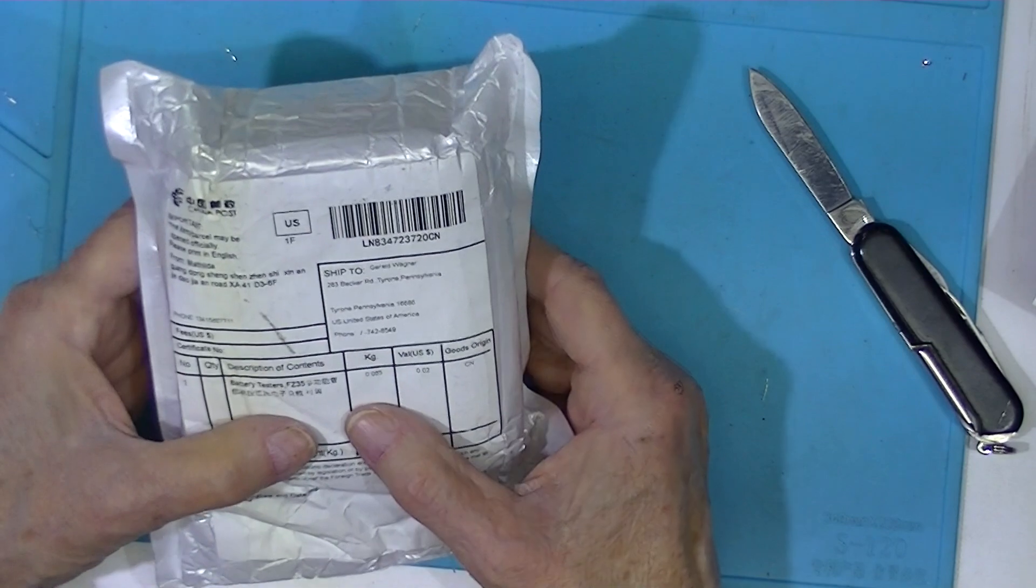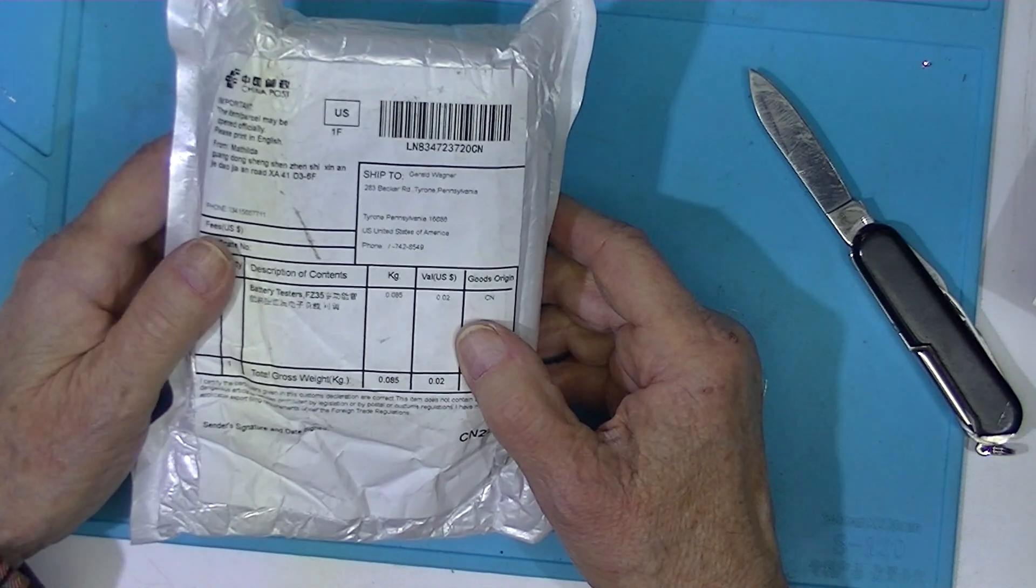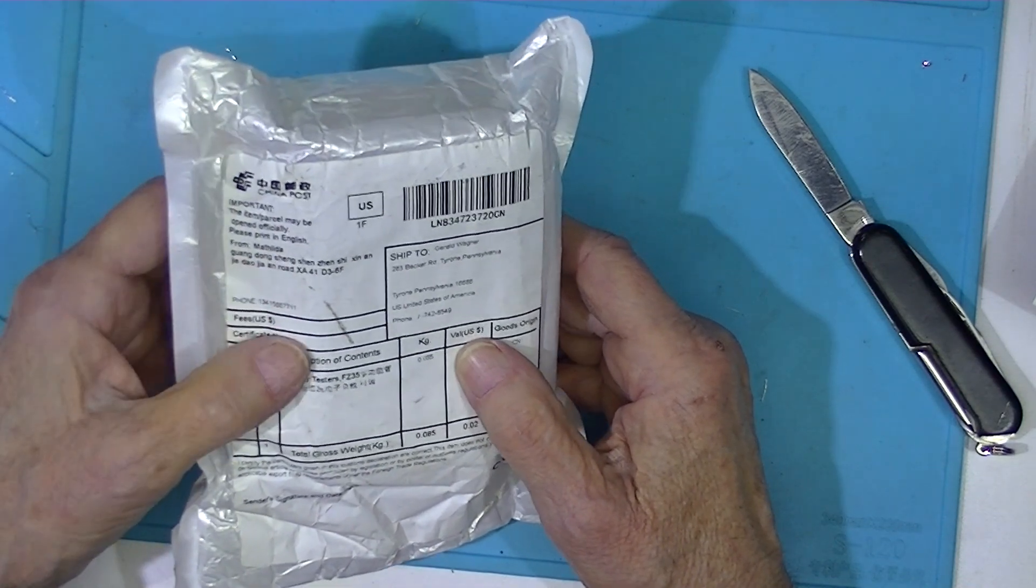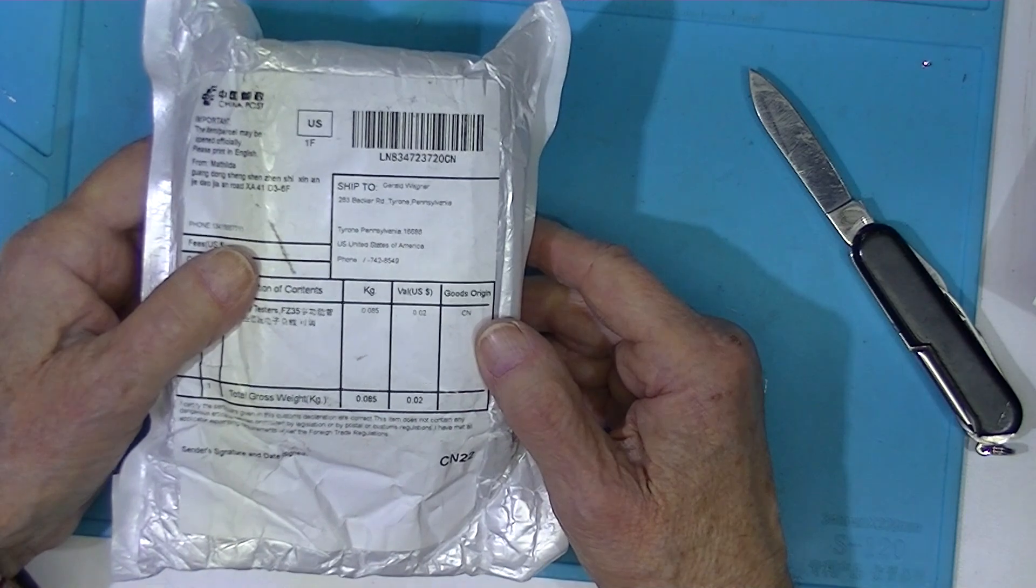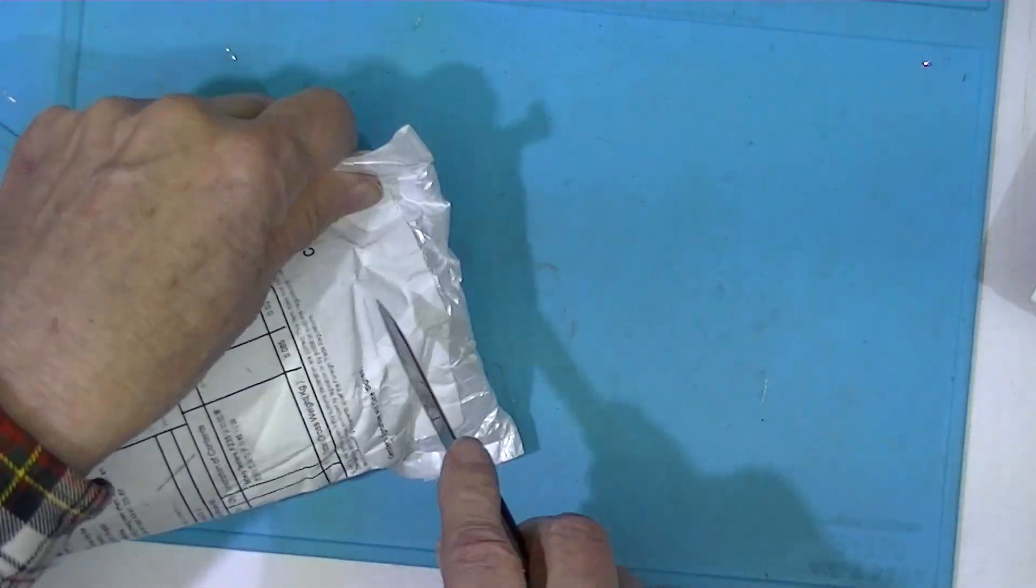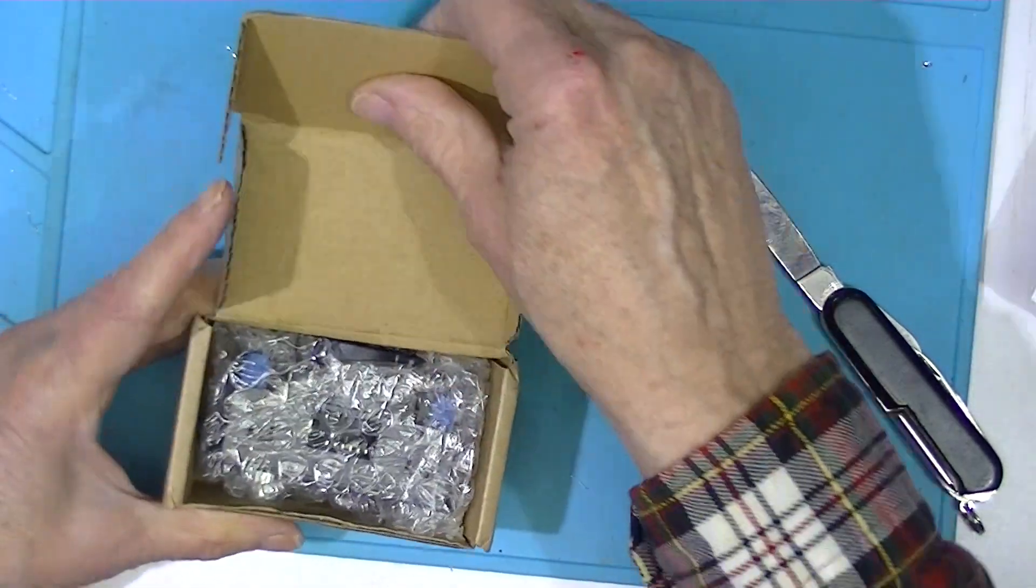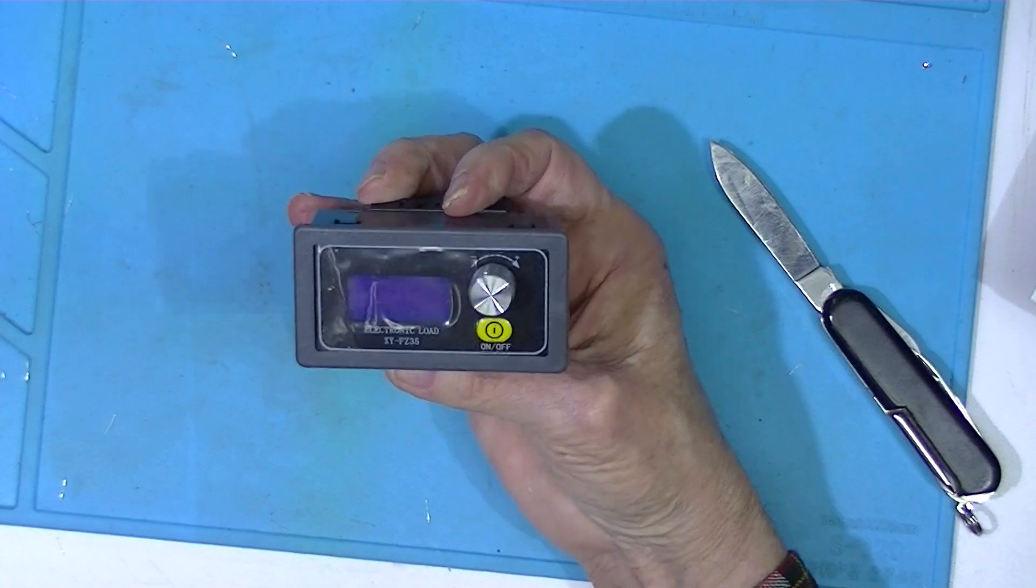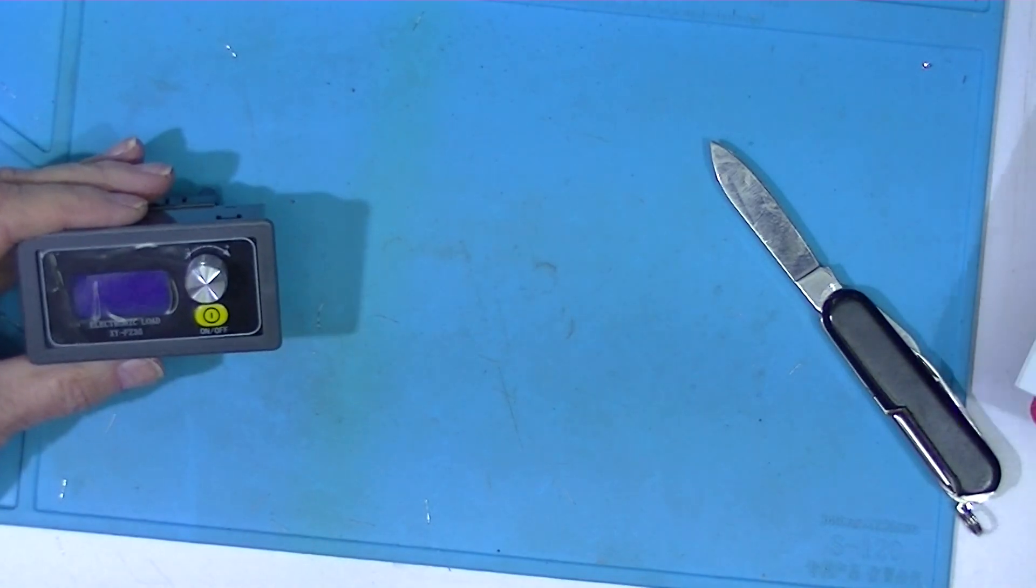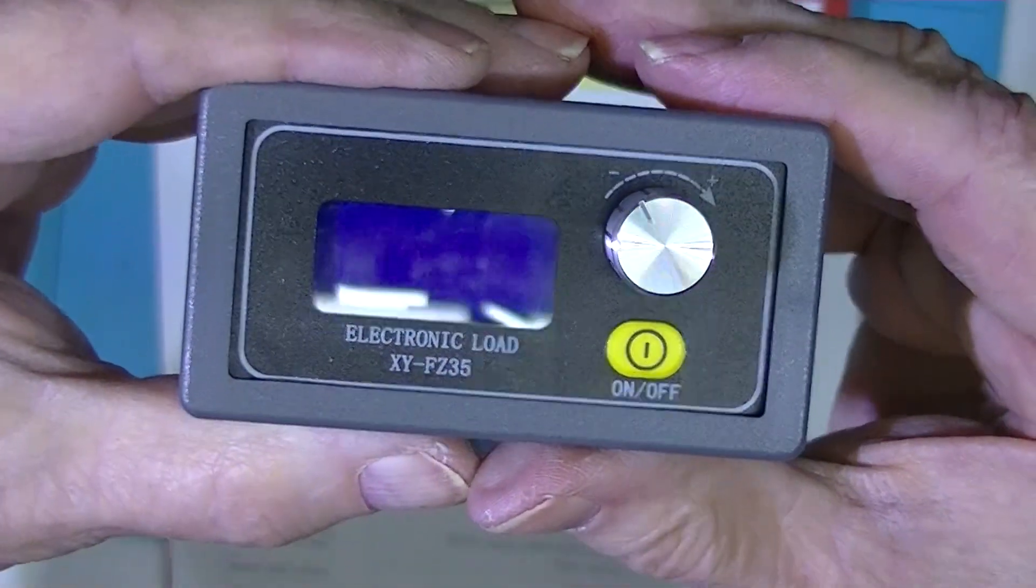This package came from China. This package is from Ali Express although Matilda shipped it. And it's an FZ 35, or two FZ 35. So it's a 35 watt load and that's what this would have predicted. And you can see it's an FZ 35.